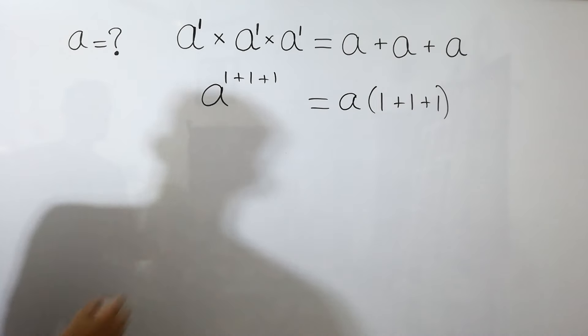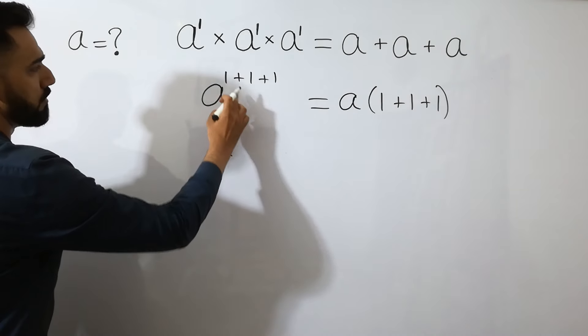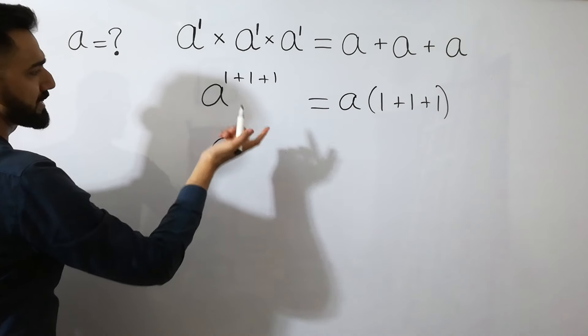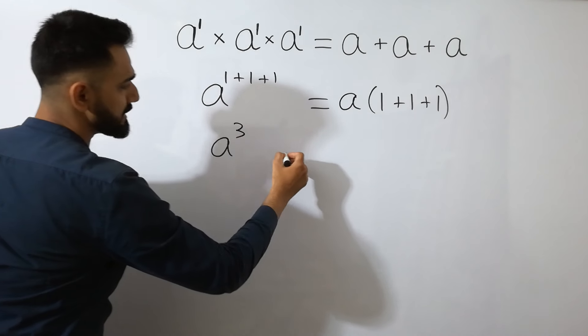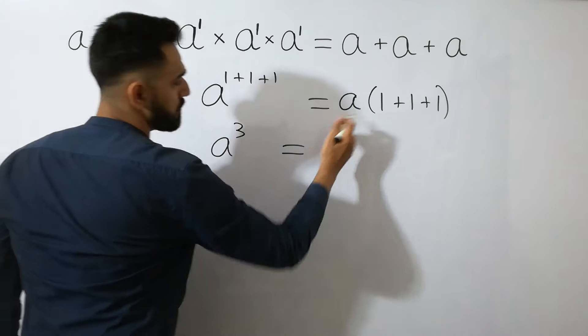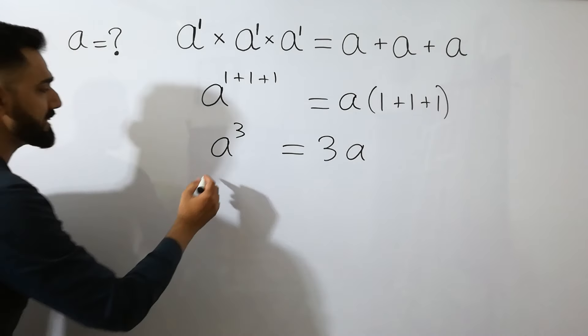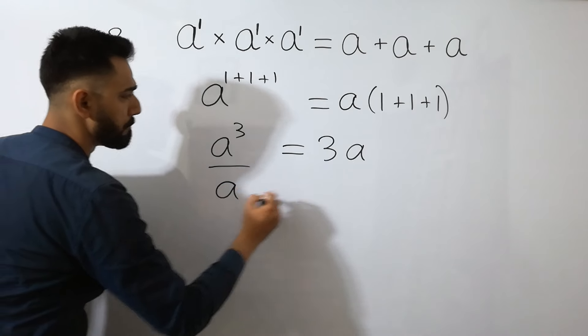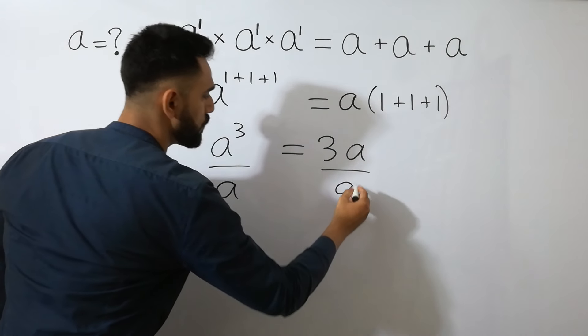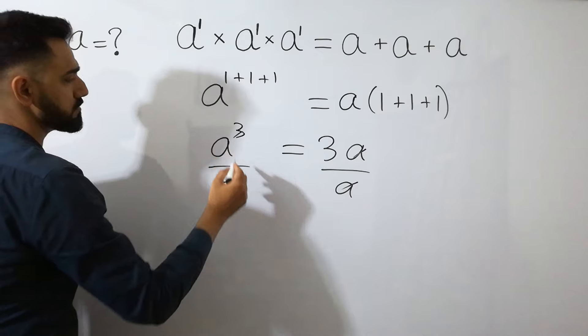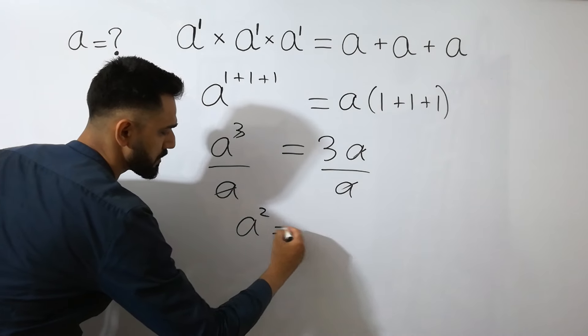Next, 1 plus 1 plus 1 is equal to 3, is equal to, we will get 3A. Next, dividing on both sides by A, we will get A square is equal to 3.